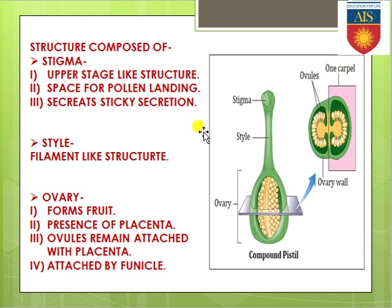The pistil is commonly made up of three structures: the first is stigma, the next is style, and the lower portion is ovary. Stigma is the upper stage-like structure, always present towards the upper portion of the pistil or carpel. It is a platform-like structure because it is responsible for the landing of pollen grains on it.